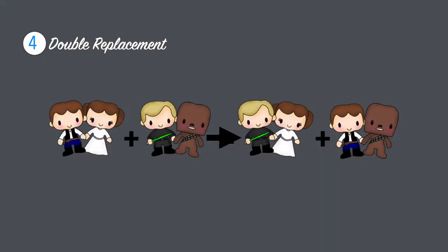This picture represents double replacement. We have two couples dancing, followed by two couples dancing that then switch partners. In variable form, you can see it as AB plus CD gives you AC plus BD.